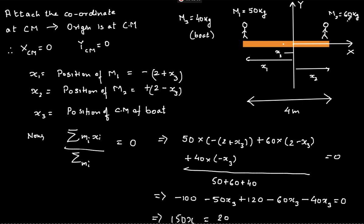If M1 and M2 were both 50 kg with M3 at 40 kg, the center of mass would be exactly at the center line of the boat. But since M2 is 60 kg, you can think of it as adding 10 kg extra on the right-hand side, so the center of mass shifts to the right. Let's say the center of mass is at point O, to the right of the boat's center. The person on the right is at coordinate x2, the person on the left is x1 meters from the system CM, and the boat's center of mass is x3 meters from the system CM.